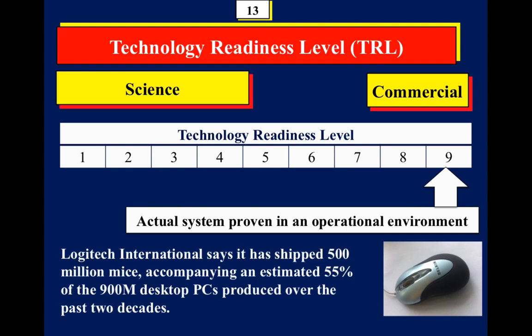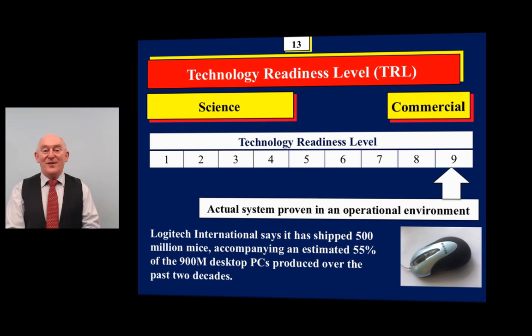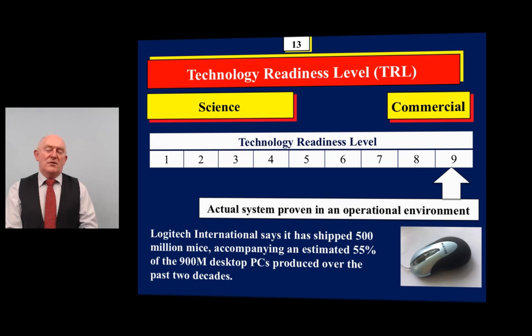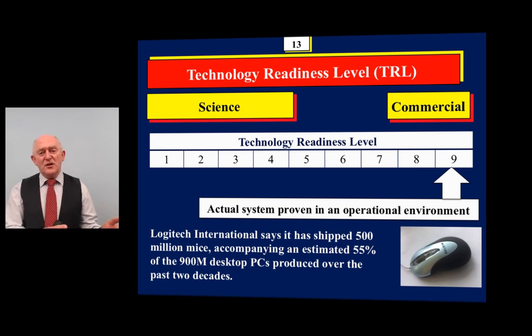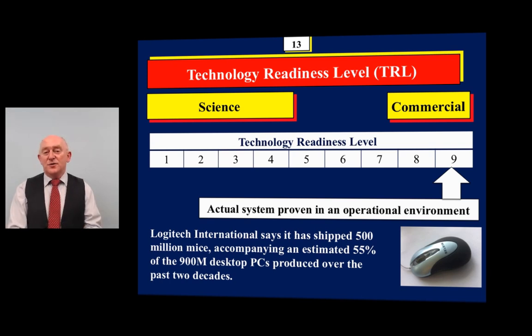Logitech, one of the biggest producers of mice, stated on their website that they've shipped over 500 million mice — representing only about half of all mice shipped over the last 20 years. That illustrates how technologies evolve. In the pharmaceutical industry that full chain could take 20 years; in the software industry, 18 months; in energy, seven or eight years. So TRL one to nine expresses the level at which a technology is at any given moment.